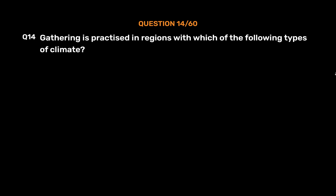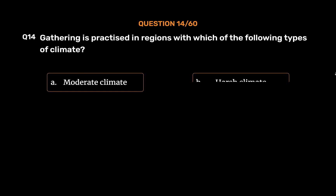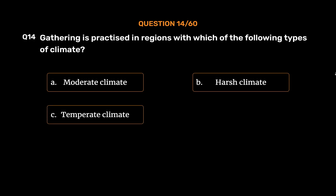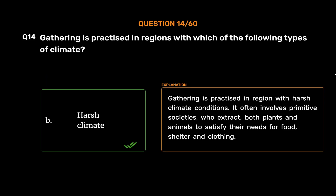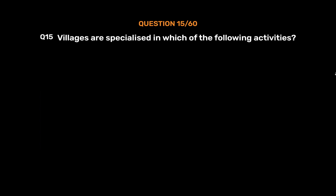Question number 14: Gathering is practiced in regions with which of the following types of climate? Option A: moderate climate, option B: harsh climate, option C: temperate climate, option D: none of these. The correct answer is option B, harsh climate. Gathering is practiced in regions with harsh climate conditions. It often involves primitive societies who extract both plants and animals to satisfy their needs for food, shelter, and clothing.